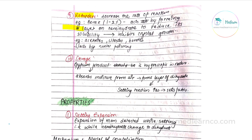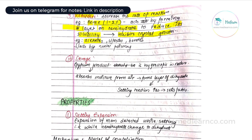Ninth factor is retarders, which decrease the rate of reaction. For example, borax at 1–2% acts by forming a layer on the hemihydrate, which reduces its solubility and inhibits crystal growth, thus retarding the reaction. Other examples include acetates, citrates, and borates, which work by nuclei poisoning.